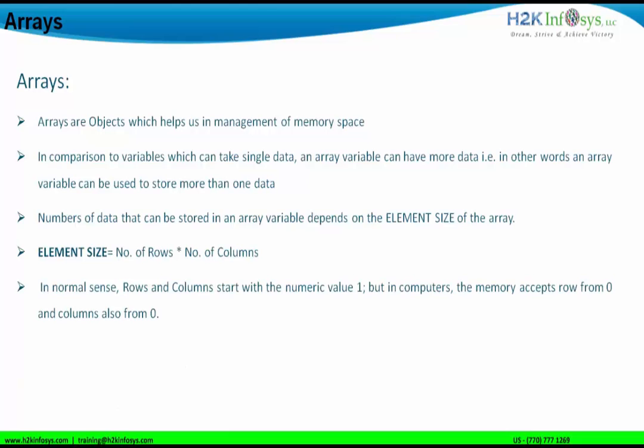In normal sense, rows and columns start with numeric value one — first row, second row, third row, or first column, second column, and so on. But in terms of computer memory, the first row is considered as index number zero and the first column is also index number zero. So if an array has four rows, in normal sense we call them row one, two, three, four; but in index terms, we call them row zero through row three. This starting of rows and columns from zero is called indexing.